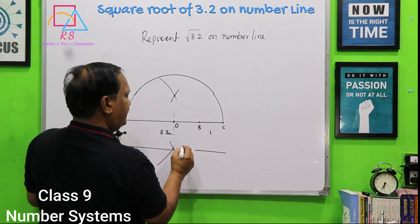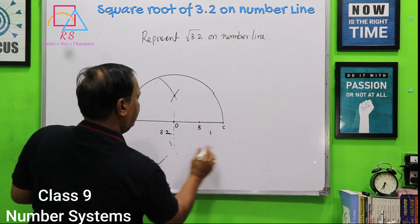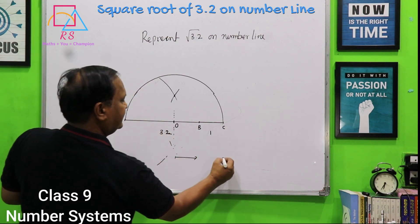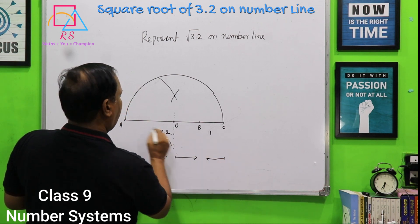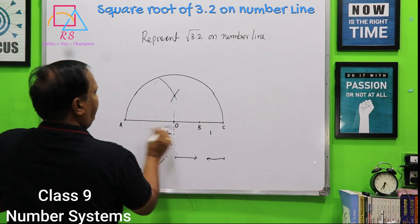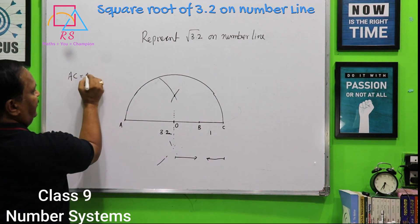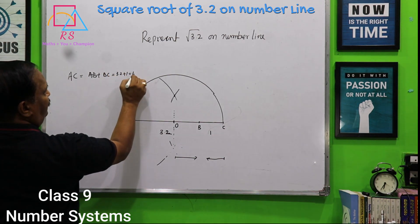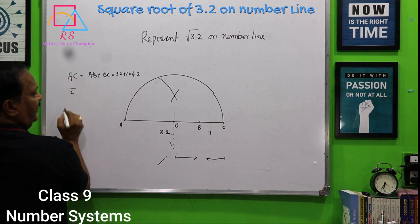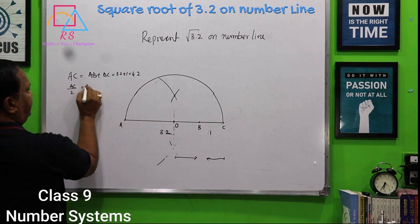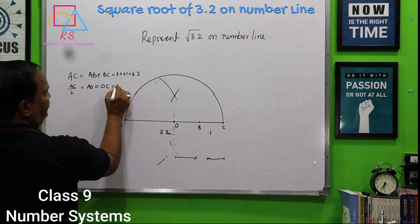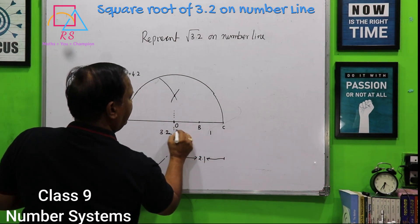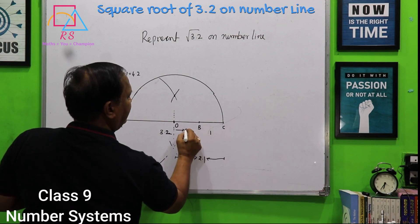And BC is equal to 1. This is radius. Total is 4.2. AC is equal to AB plus BC which is equal to 3.2 plus 1, 4.2. And half of this gives AO. AC is equal to AO which is equal to OC which is equal to 2.1. So, this is 2.1. And OB is 2.1 minus 1, so 1.1.